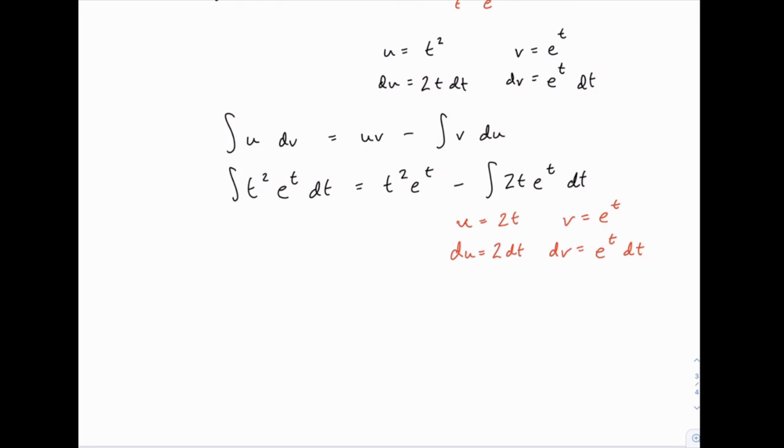Okay, so now I need a little more space because I'm going to have to write the whole thing. Our original problem equals t squared e to the t. That's from the first integration by parts application. Minus, and then I'm going to need a big set of brackets.